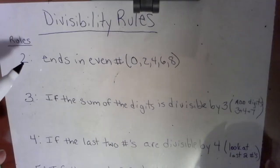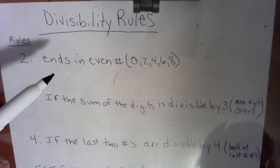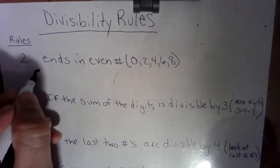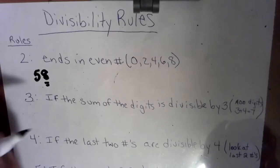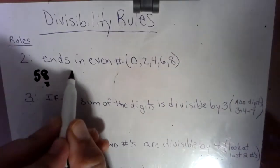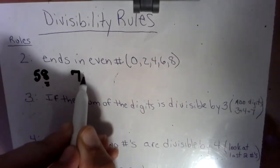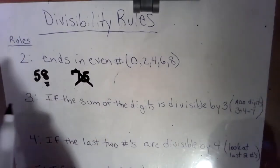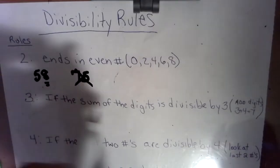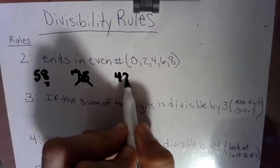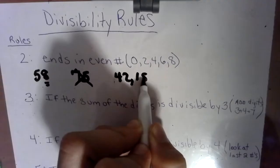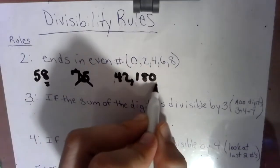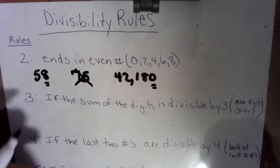A number is divisible by two if it ends in an even number. So even numbers are 0, 2, 4, 6, or 8. For instance, the number 58 ends in an even number, so that's divisible by two, whereas 75 would not be divisible by two. Can be very long numbers, 42,180, that right there is divisible by two because it ends in an even number.